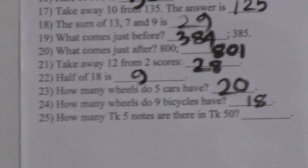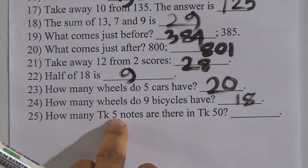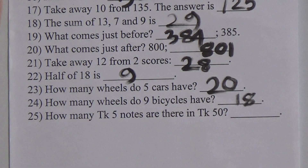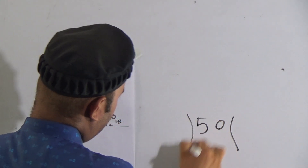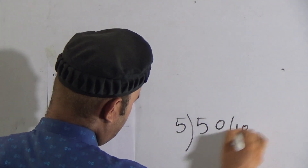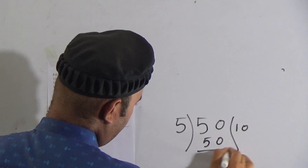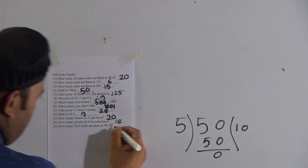Now number 25: how many taka-5 notes are there in taka 50? We have to divide 50 by 5. We know that 5 tens are 50. So how many taka-5 notes are there in taka 50? It will be 10 notes.